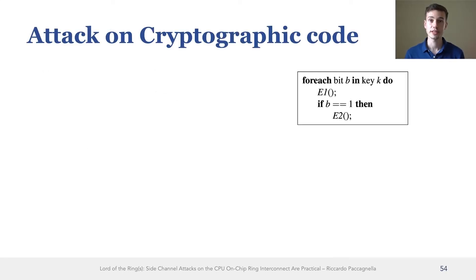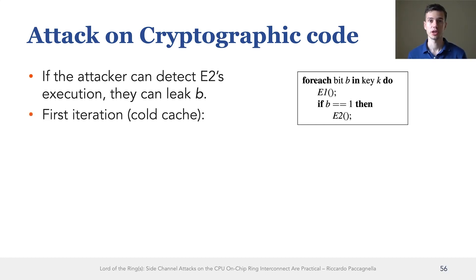Let's now move on to the first side channel attack against cryptographic code. I want to be very upfront about it. Here we are targeting code that is known to be vulnerable to side channel attacks. However, our attack is the first one to show that this code leaks specifically over the ring interconnect channel. Now, the goal of the attacker given this pseudocode is to detect the execution of E2, because if E2 executes, that means that the bit is equal to one.